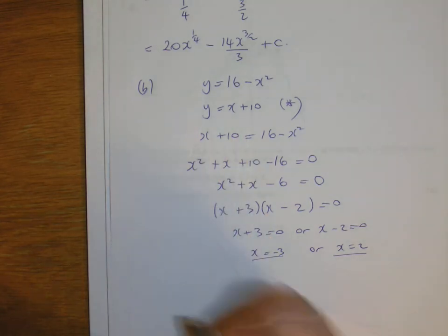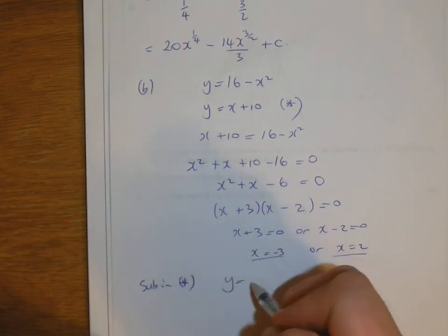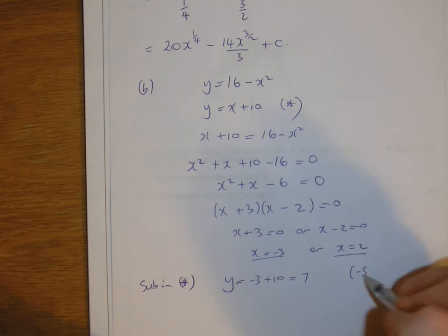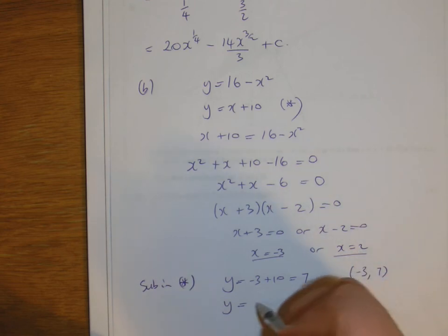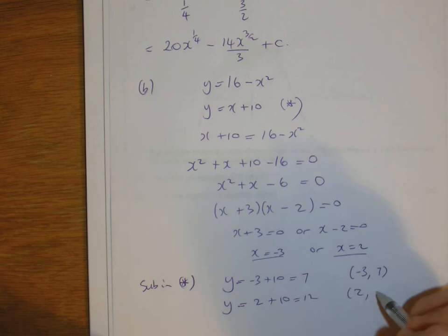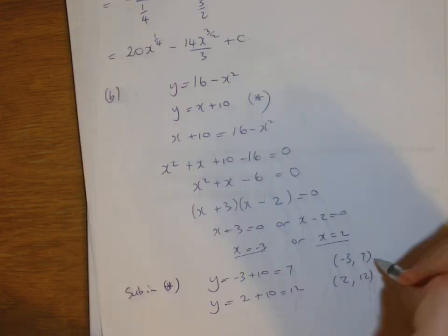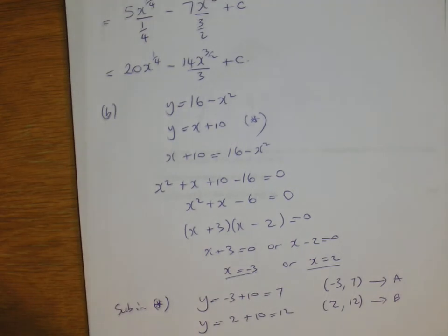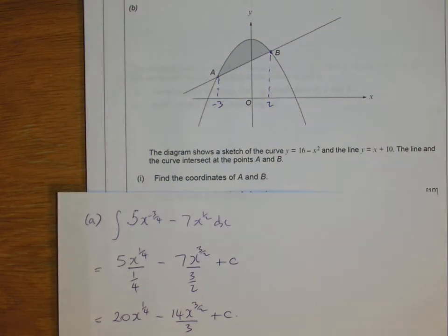We'll use the line equation since it's easier to work out y. Substituting: when x is minus 3, y equals minus 3 plus 10 which equals 7, giving coordinate (−3, 7). When x is 2, y equals 2 plus 10 which equals 12, giving coordinate (2, 12). Looking at the diagram, A has a negative x value corresponding to (−3, 7) and B has a positive x value corresponding to (2, 12). The x values are the important ones for the integration.